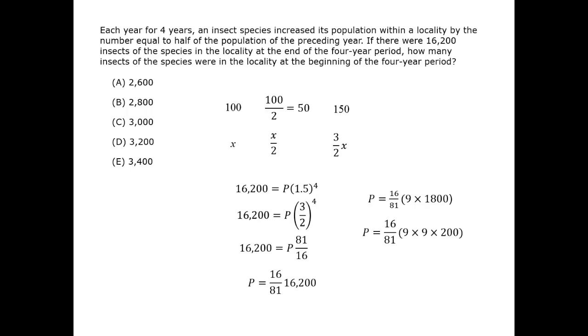Therefore, we have an 81 not only in the denominator but in the numerator, and they cancel. We learn that p, the initial population, was 3,200. The correct answer is D. Thank you.